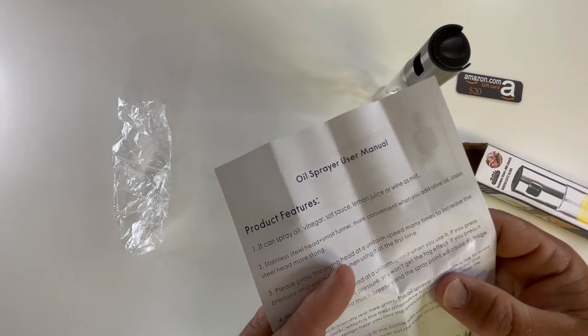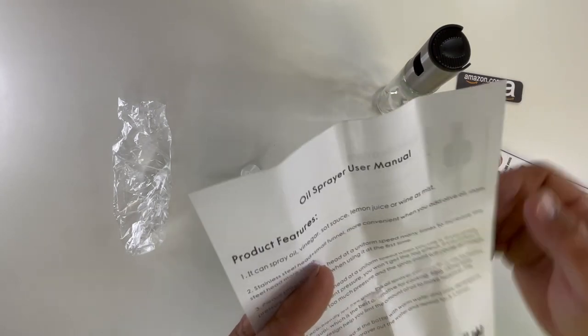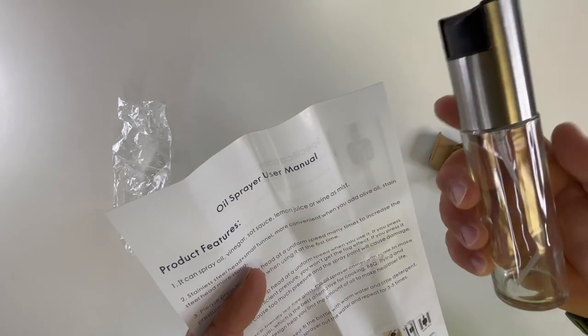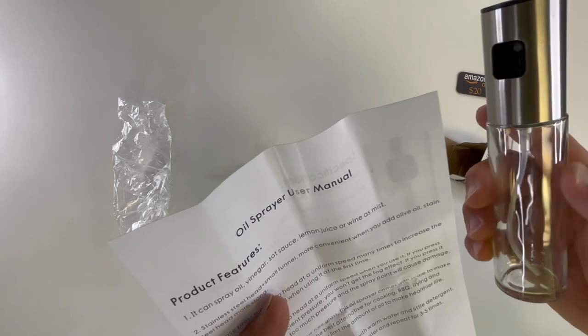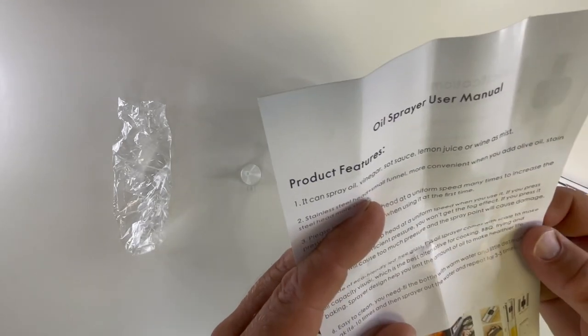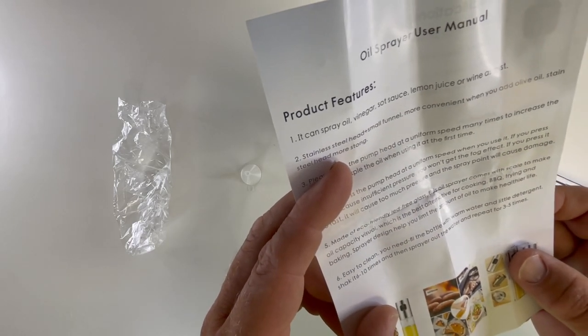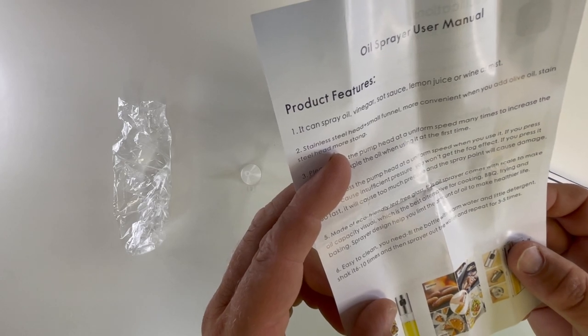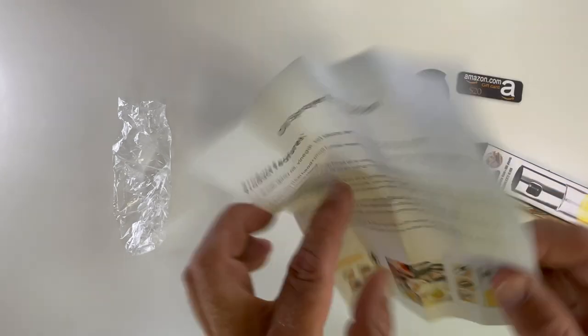Made of eco-friendly, lead-free glass, this oil sprayer comes with a scale to make oil capacity visual. Yeah, I don't see that at all. There's no scale. So, good luck with that. Sprayer designed to help you emit the amount of oil and make your healthier life. Easy to clean. You fill the bottle with warm water and a little detergent. Shake it six to ten times. And then spray out the water and repeat three to five times.